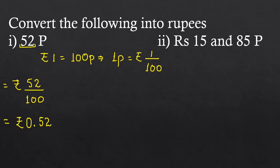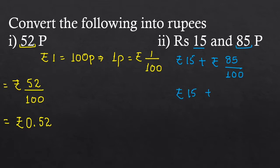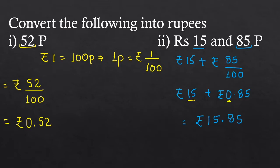The next part is rupees 15 and 85 paise. Rupees 15 is already in rupees, so we only need to convert 85 paise into rupees. Rupees 15 plus 85 paise is written as 15 plus 85 upon 100, which equals rupees 15 plus 0.85. Since 15 is a whole number and 0 is the whole part of 0.85, we add 15 plus 0 to get rupees 15.85.